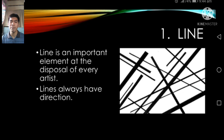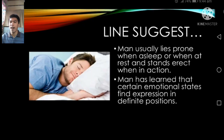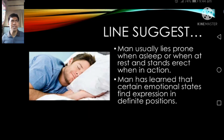Let's begin with line. Line is an important element at the disposal of every artist. Lines always have directions — diagonal, horizontal, and vertical. Line also suggests that man usually lies prone when asleep or at rest and stands erect when in action. Man has learned that certain emotional states find expression in definite positions, and line is based on our emotional states which find expression in definite positions.